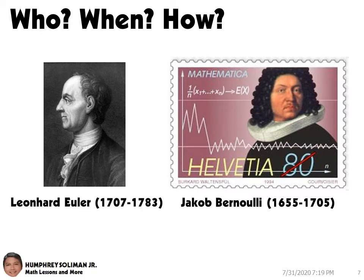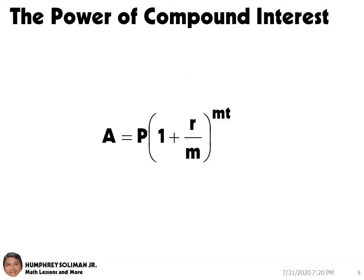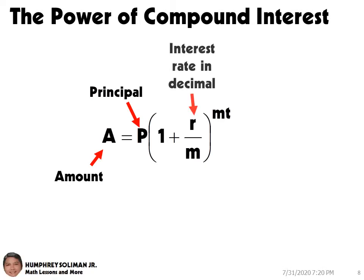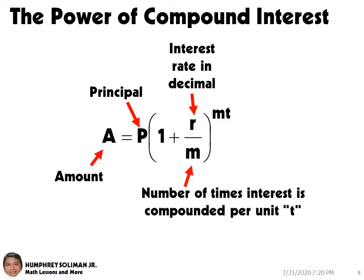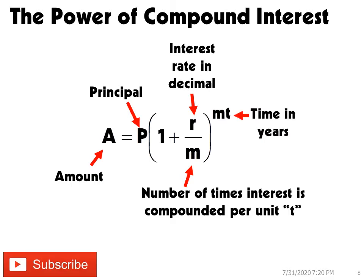Bernoulli's problem was related to compound interest. Let's go over the formula for compound interest as a review. A is the amount you will get after the investment already earned interest. P is the principal amount at the start of the term. R is the rate of interest in decimal. M is the number of times interest is compounded per unit of time. T is the time in number of years.